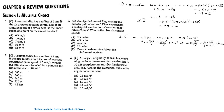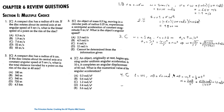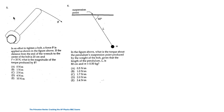For question 4, an object originally at rest begins spinning under uniform angular acceleration. In 10 seconds it completes an angular displacement of 60 radians. What is the angular acceleration? Using the kinematic equation for angular motion, and since it starts from rest (ω₀ = 0), the angular acceleration equals 2Δθ / t², which gives 1.2 radians per second squared. The answer is C.